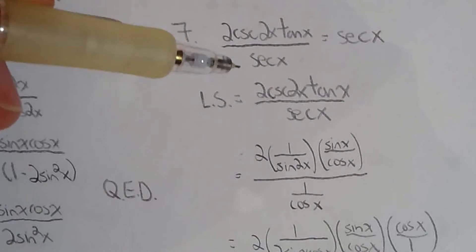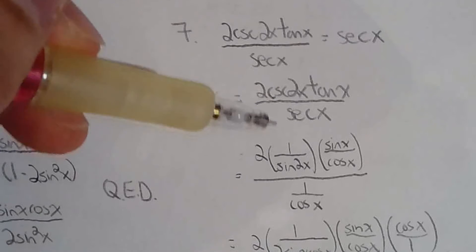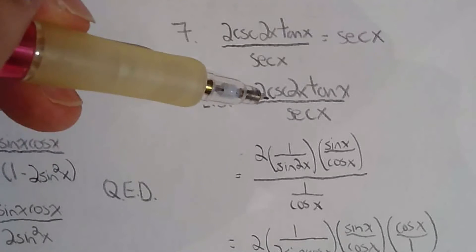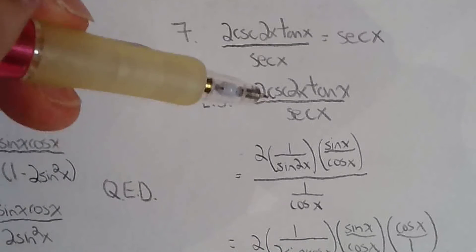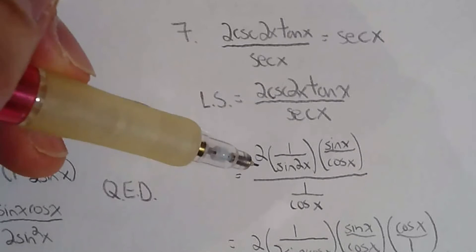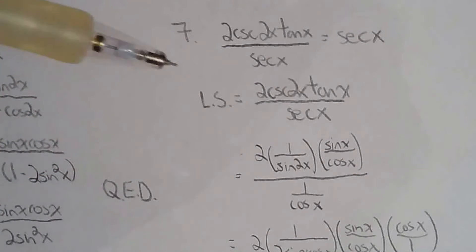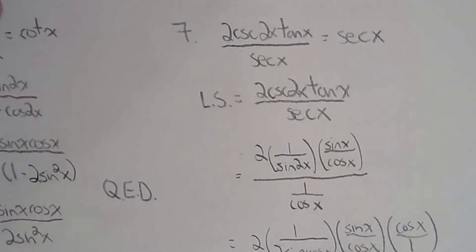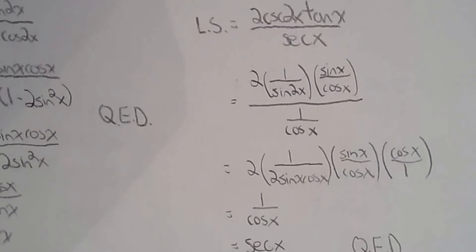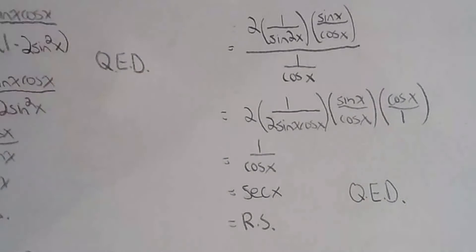For number seven, I took the left side and used reciprocal identities: cosecant 2x is 1 over sine 2x, secant x is 1 over cosine x, and tan x is sine x over cosine x. Then I applied the double angle formula for sine, simplified, and got secant x.